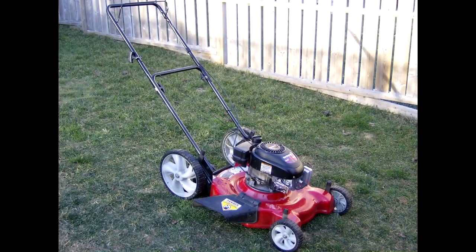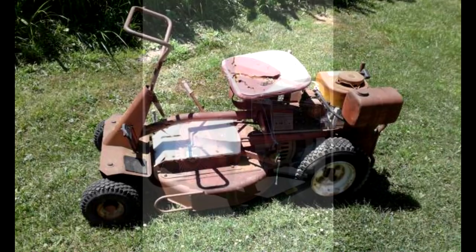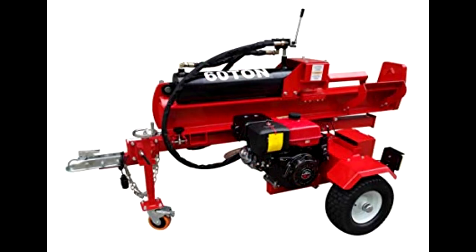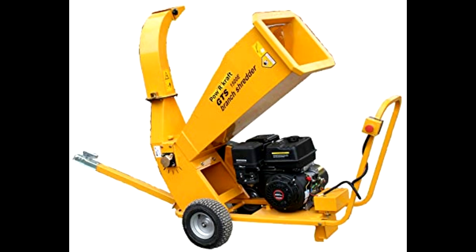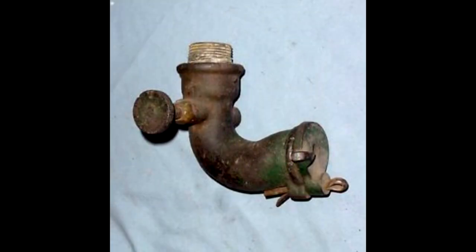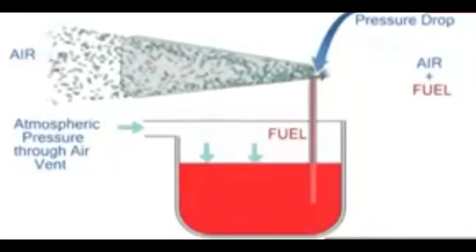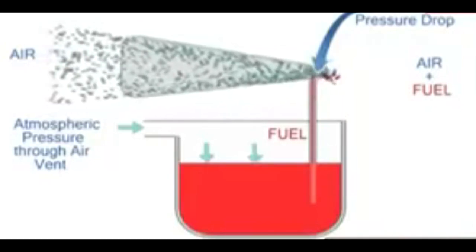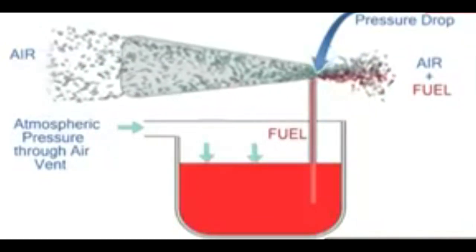This type of carburetor is commonly found on stationary engines such as lawnmowers, power washers, generators, and other small outdoor equipment that runs at constant RPMs. As a matter of fact, the early hit-and-miss gasoline engines used a very similar concept for their carburetors — they weren't much more complicated than this. Understanding the carburetor is the first step into understanding how to diagnose a simple carburetor like this.